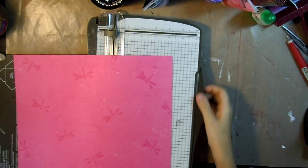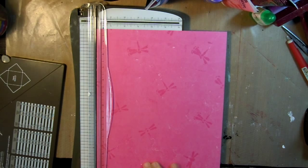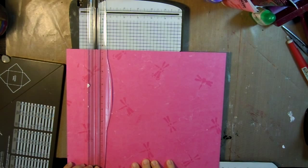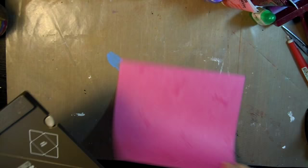I'm going to start with a pink piece of 12 by 12 pattern paper since we are celebrating Breast Cancer Awareness Month, and I'm going to cut it down to 9 3/4 by 9 3/4 inches. Next we'll be using the 1-2-3 punch board.